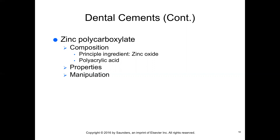Zinc polycarboxylate cement sets through an acid-base reaction. It can be used for final cementation of indirect restorations, but today is primarily used for long-term temporary cements. It is supplied as a powder-to-liquid system and may come in a pre-dosed capsule for mixing in an amalgamator. The powder is essentially zinc oxide and the liquid is an aqueous solution of polyacrylic acid, which produces little irritation to the pulp. It has high viscosity that may be thinned by vibratory action — never by adding more liquid, as that will dramatically reduce the strength. These cements have lower compressive strength and higher solubility compared with other cements.